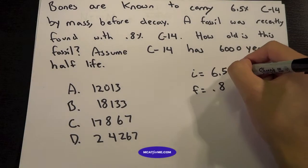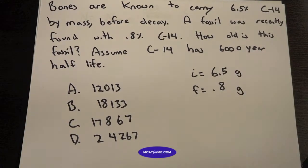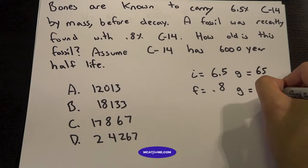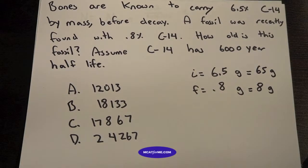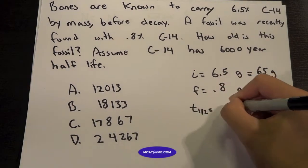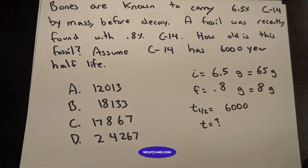And that's just to make our lives easier because percentages can confuse people a lot of times. Let's just say this is 6.5 grams and we're left with 0.8 grams. Let's even make this 65 and 8. So we start with 65 grams and we ended with 8. And the half-life equals 6,000. And we want to find how old this thing is.